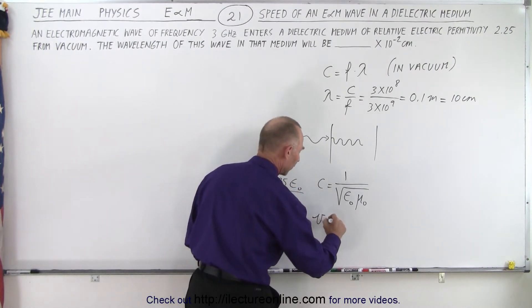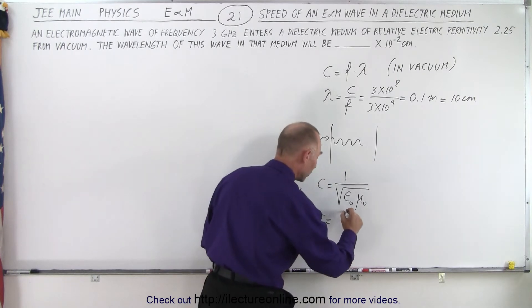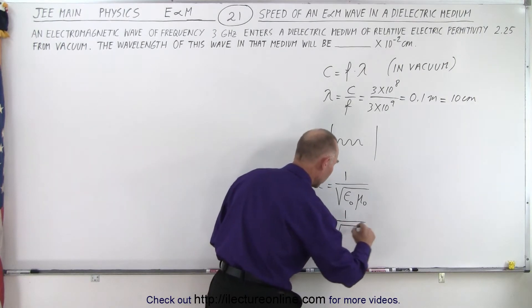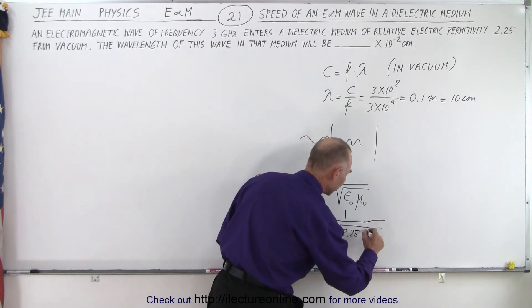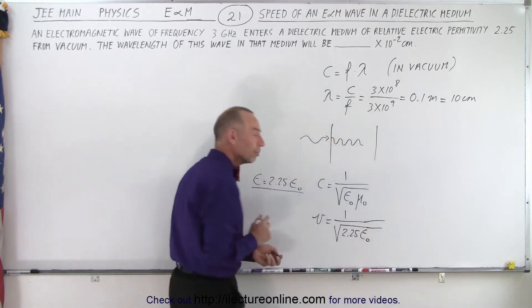So now the new speed of light, let's call it the velocity in the medium, is going to be 1 over the square root of 2.25 times ε₀. But what about μ₀? They don't tell us anything about the μ₀ and this is where you might get stuck.